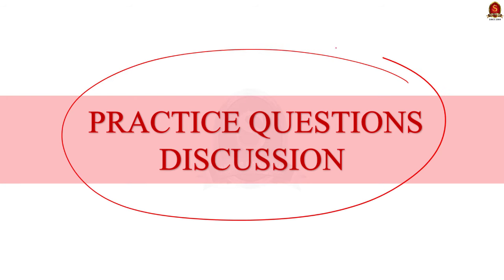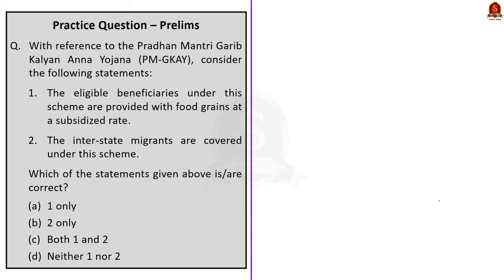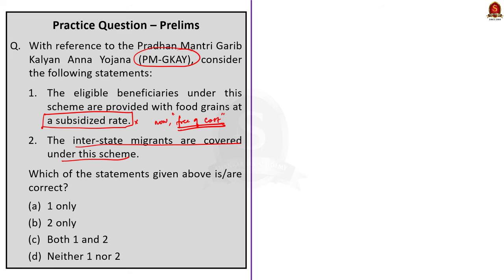Today we are having four questions. See the first question: With reference to the Pradhan Mantri Garib Kalyan Anna Yojana or PMGKAY, consider the following statements. Statement 1 says that eligible beneficiaries under the scheme are provided with food grains at a subsidized rate. From our discussion, earlier this was the case, but after January 2023 the scheme got merged with the NFSA and food grains are now given free of cost, so the first statement is incorrect. Statement 2 says that interstate migrants are covered under the scheme — from our discussion, this is correct. So the correct option is option B.